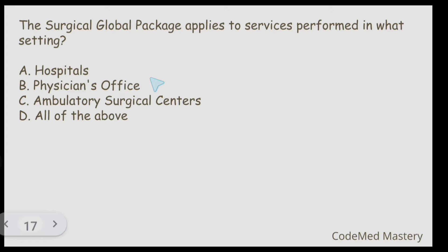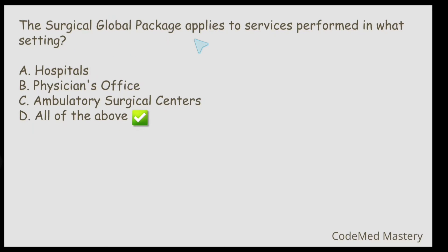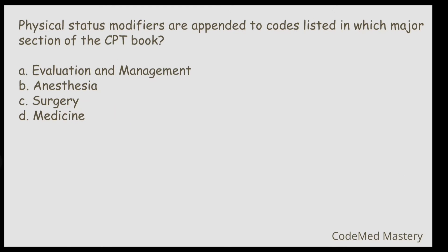Next question: The surgical global package applies to services performed in what setting? Option A: hospitals. Option B: physician office. Option C: ambulatory surgical center. Option D: all of the above. The right answer is option D — all of the above. The surgical global package applies to services performed in all of these settings.